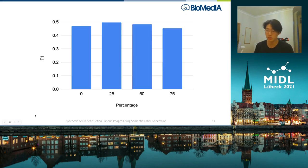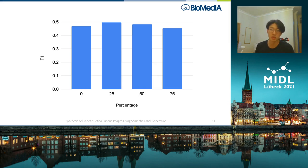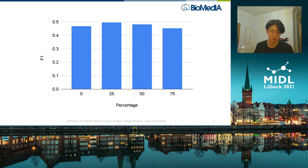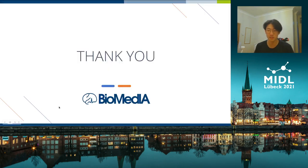So how did we do? The bar on the left was trained on entirely real data and acts as our baseline. We found that models trained on 25% and 50% synthetic data yielded a small improvement over the baseline. But at 75%, we actually observed a drop in performance, possibly due to the network overfitting to features only present in the synthetic data. What this shows is that the use of synthetic data to improve the performance of segmentation models is viable. I know that was all pretty rapid fire, but I'm out of time — thank you so much for listening, and I hope you enjoy the rest of your conference.